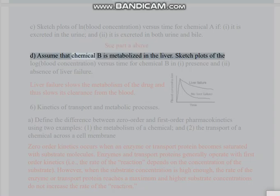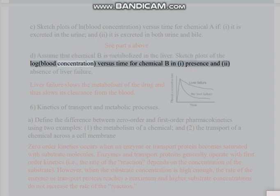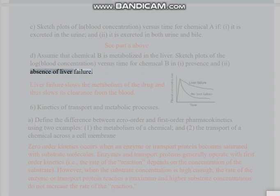Part D: Assume that chemical B is metabolized in the liver. Sketch plots of the log blood concentration versus time for chemical B in: (i) presence and (ii) absence of liver failure. Liver failure slows the metabolism of the drug and thus slows its clearance from the blood.